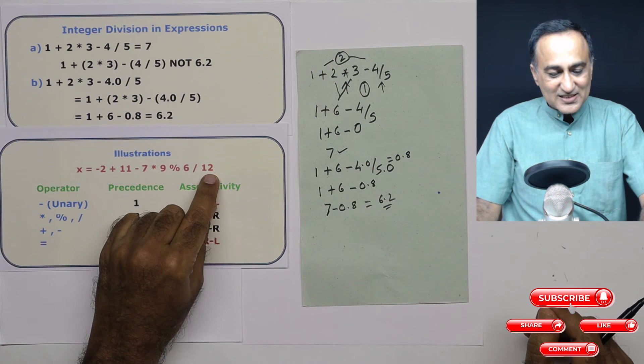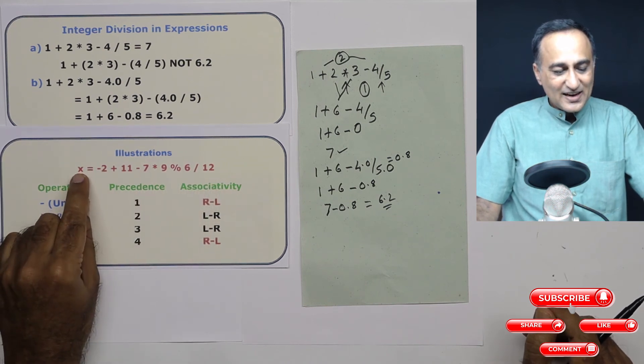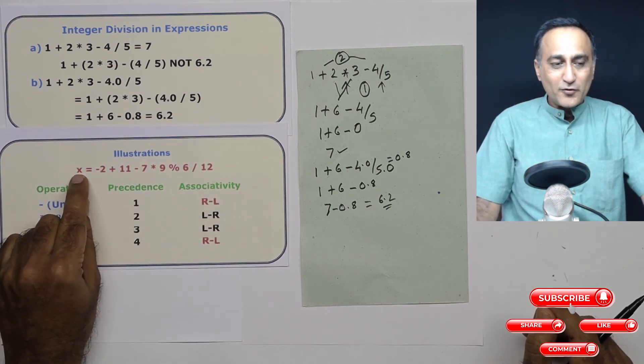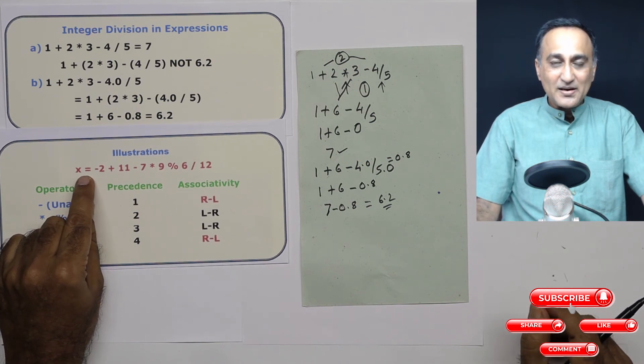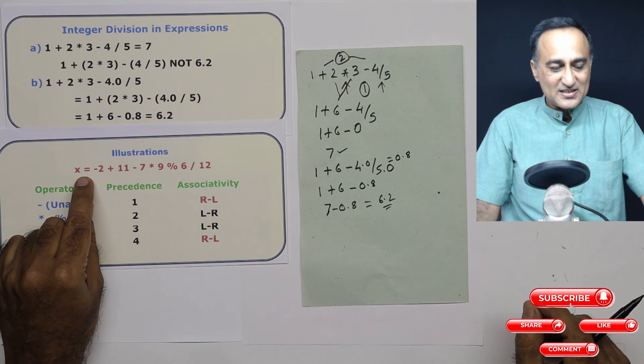Finally, the result of this is given to x. And in C, this is a new thing for you. Maybe this is known as the assignment operator. The assignment is also an operator in C. Therefore, assignment has got the lowest priority and it is always from right to left.